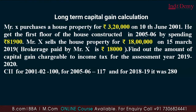We will now work out a long term capital gain example. Mr. X purchases a house property for Rs. 3,20,000 on 10th June 2001. He gets the first floor constructed in 2005-06. He sells the house property for Rs. 18,00,000 on 15th March 2019. He paid a brokerage of Rs. 18,000 for selling that property.